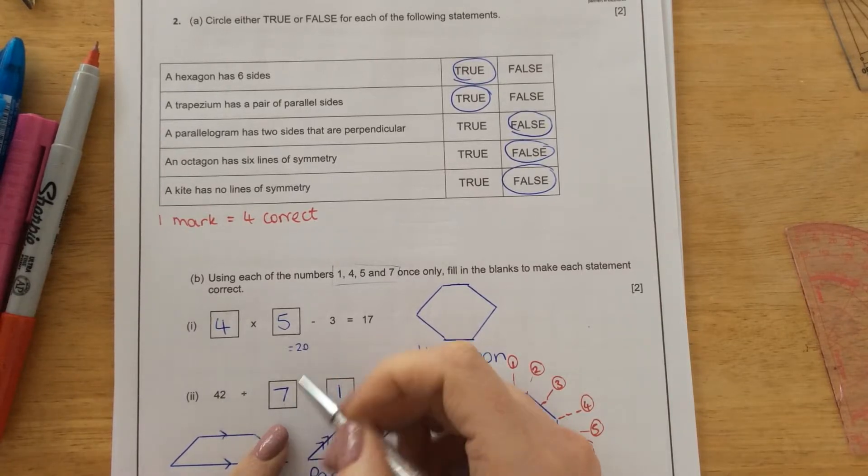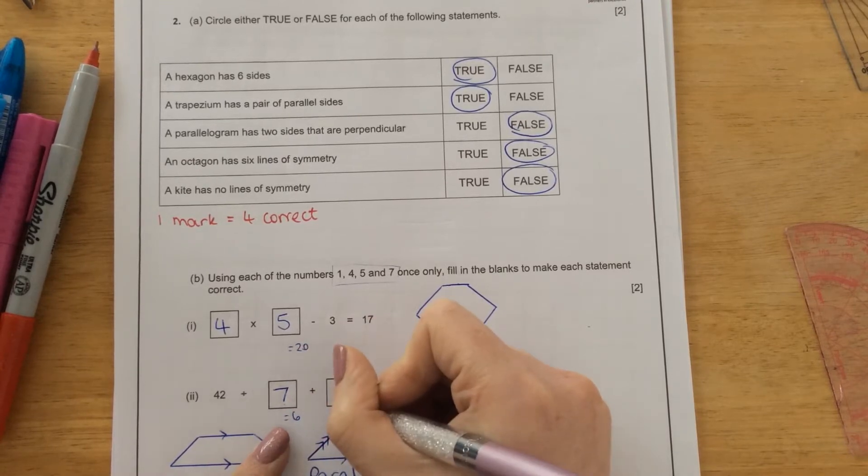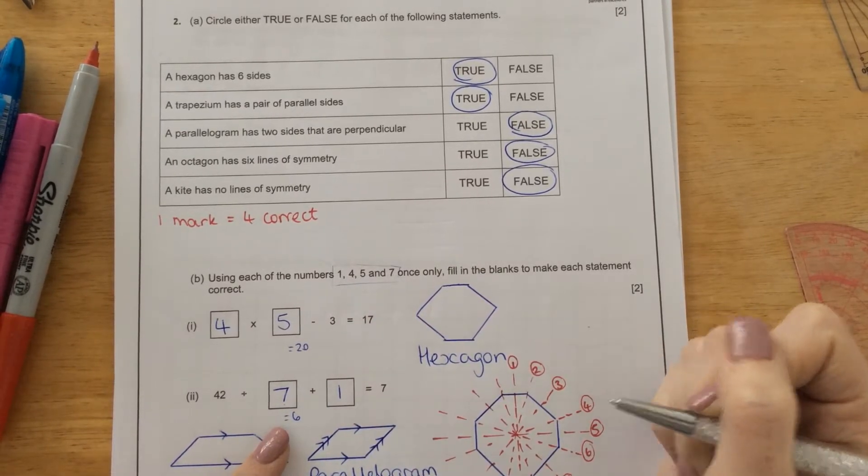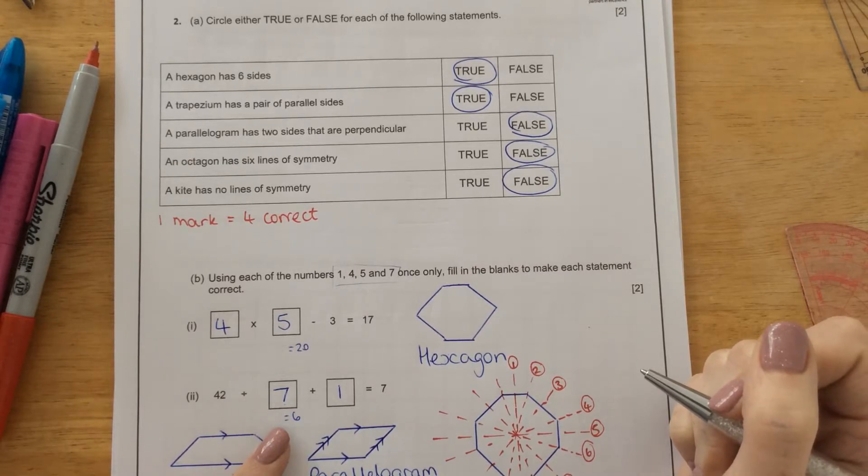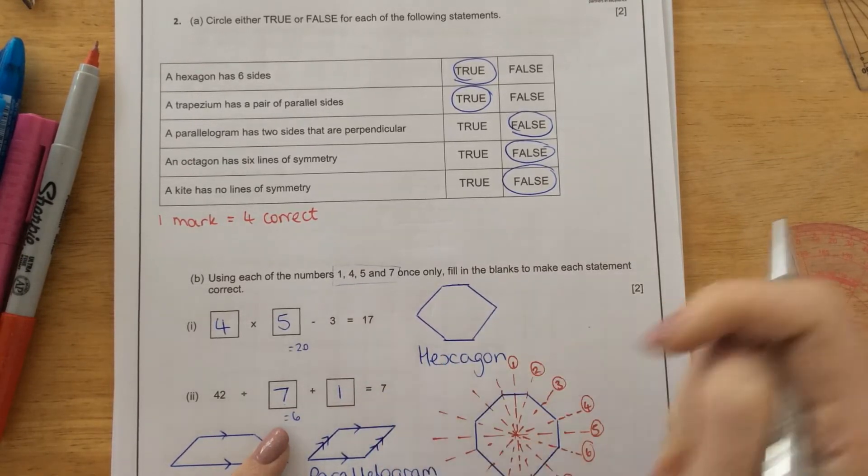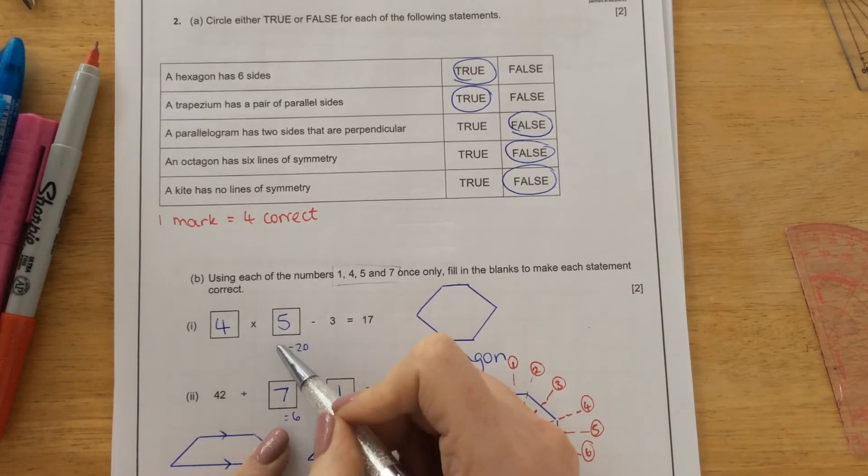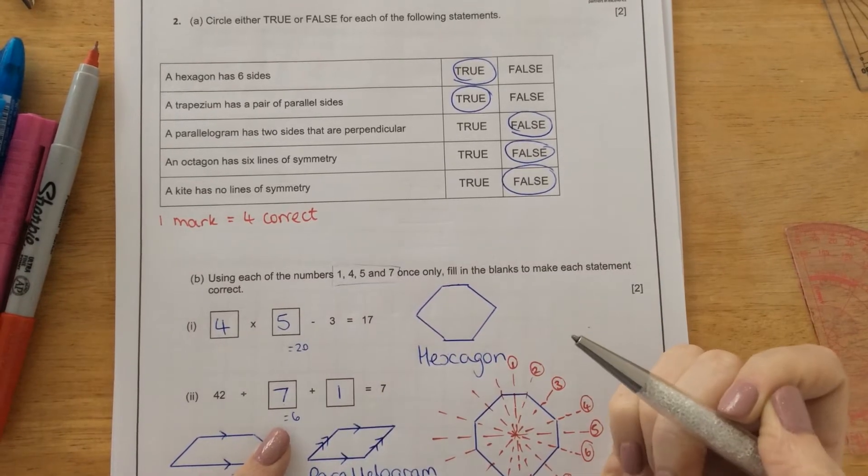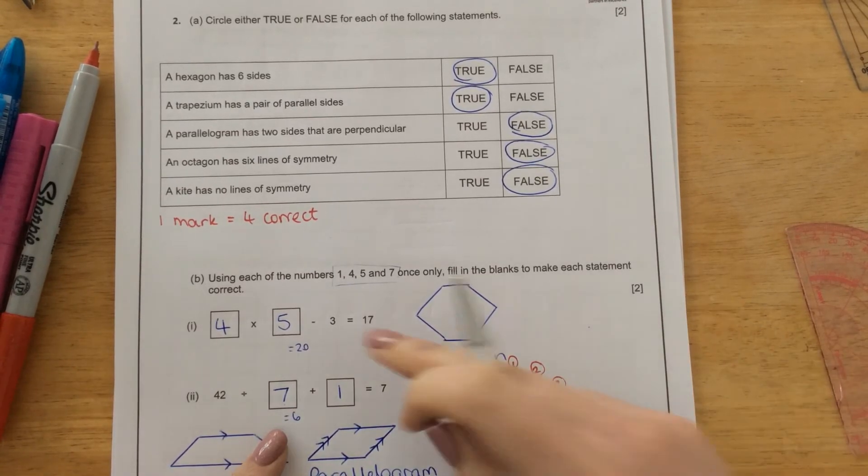So if we double check that, 42 divided by 7 is 6, add on 1 is 7. So you'll have one mark for this one correct and this one correct. These don't have to be in the same order. You could have 5 here and 4 there and that would still be right. But in this box, you would have to have them in the correct order, 7 in this box and 1 in that box.